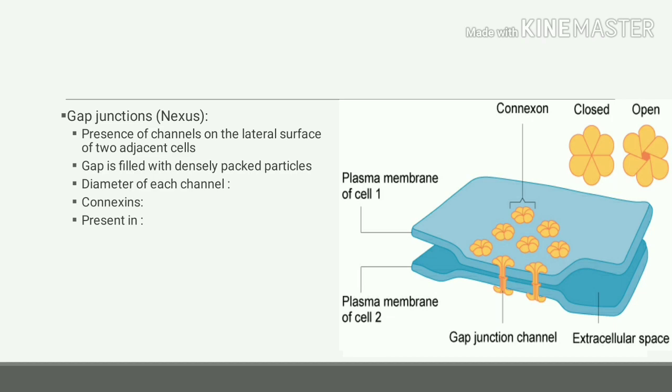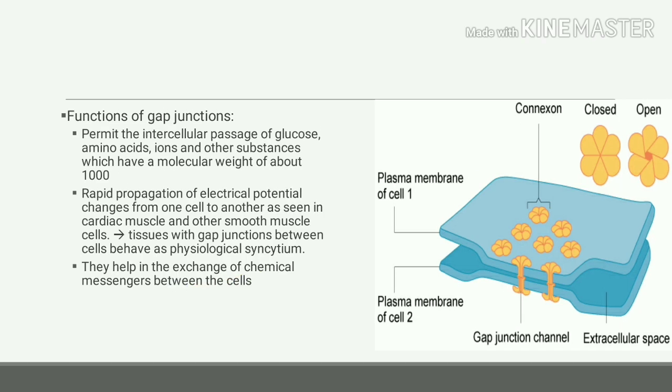What are the functions of gap junctions? They permit intercellular passage of glucose, amino acids, ions, and other substances having molecular weight more than 1000. They are important for the propagation of electrical potential from one cell to another, and therefore tissues having gap junctions behave like physiological syncytium or single unit.